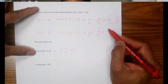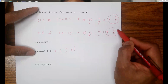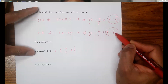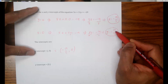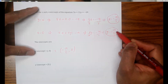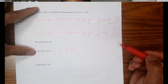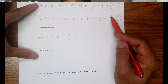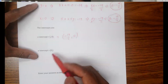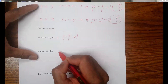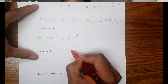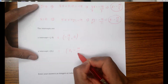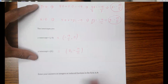In this case, 19 over 11 — there is no common factor, so it's already in reduced form. I'm going to note this value for the y-coordinate. So the y-intercept is (0, negative 19 over 11). That's it.